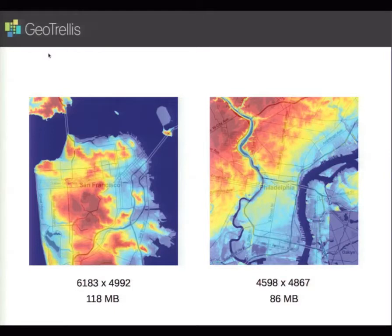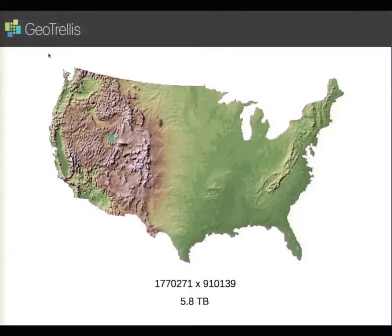Traditionally, Azavea has been using GeoTrellis at city scale, working with rasters around 100 megabytes that fit in memory and can be processed very quickly. But we face challenges when we want to broaden the scale to the entire contiguous United States — a rough estimate for that dataset is about six terabytes. So we start dealing with the issue of scale.